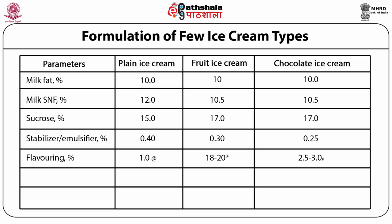Chocolate ice cream requires addition of around 2.5 to 3% cocoa powder or chocolate liquor. The brown color is automatically conferred by the cocoa powder or chocolate liquor itself. For fruit ice cream, the fruit pulp confers natural color; if intensity is lower than desired, externally permitted colors around 0.5% can be added. In plain ice cream, appropriate coloring must be added. Total solids for plain ice cream would be around 38 to 39%, for fruit ice cream around 40 to 42%, and for chocolate ice cream around 41 to 42% due to higher sugar and cocoa.